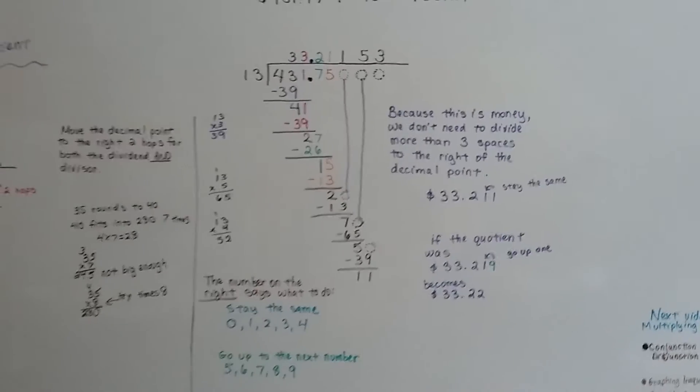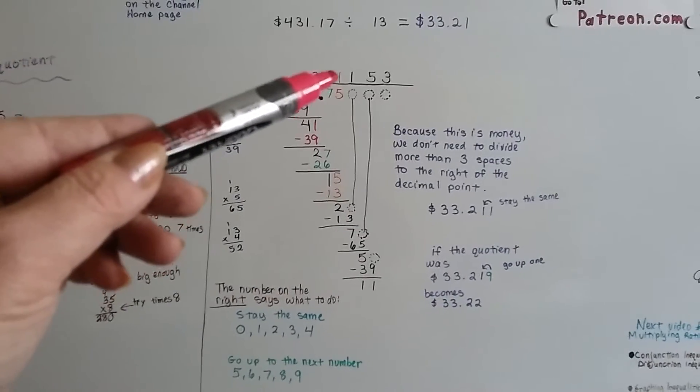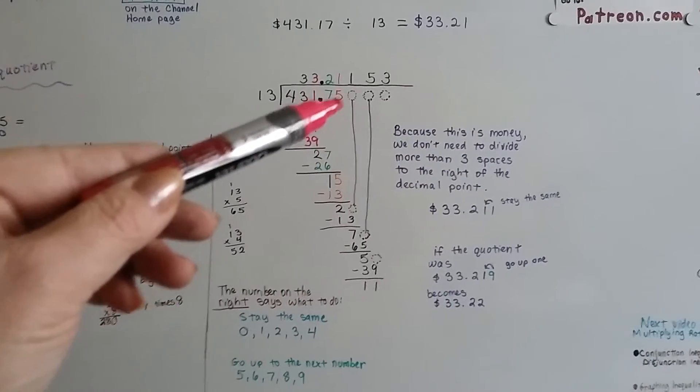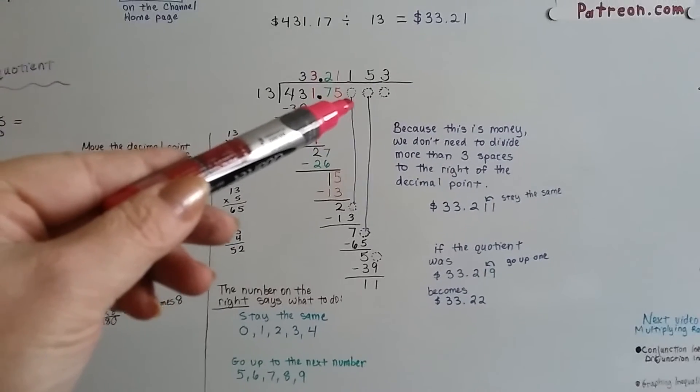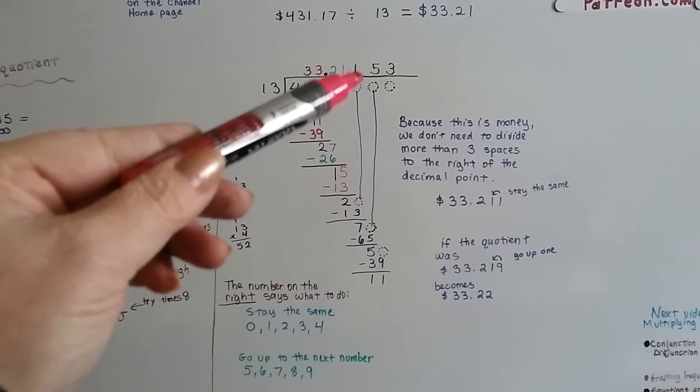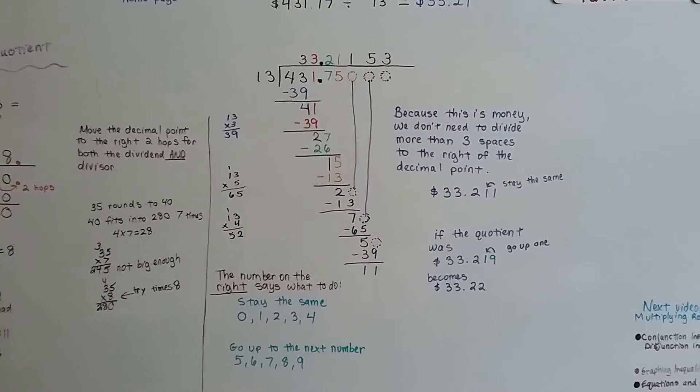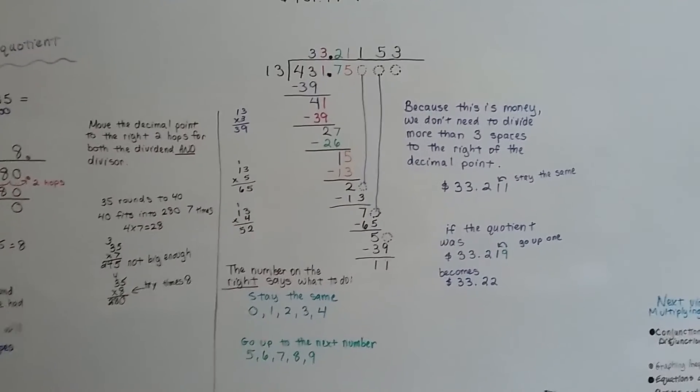So when you're doing long division or division with money, just remember you only need a couple spaces past here. If you go to the third space past the decimal point to the right, it'll help you round the pennies place value to go up or down.